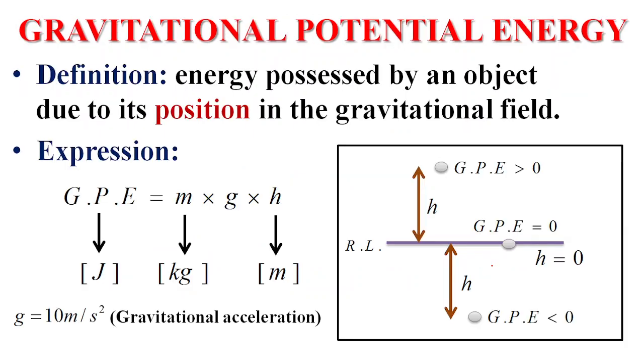Second form of energy is gravitational potential energy. In kinetic energy, energy is due to motion or speed. Now the gravitational energy is energy possessed by an object due to its position in the gravitational field, energy due to height or position.